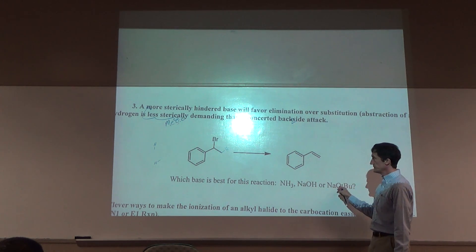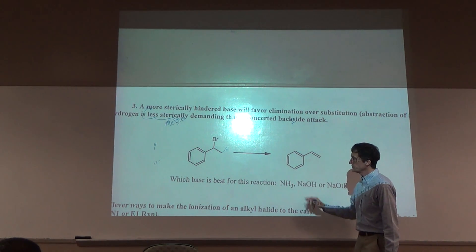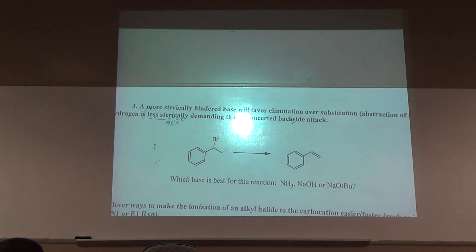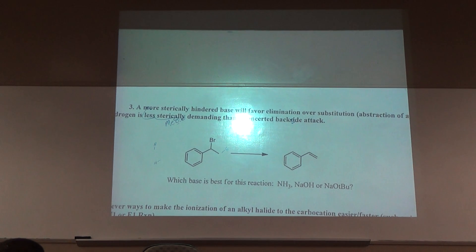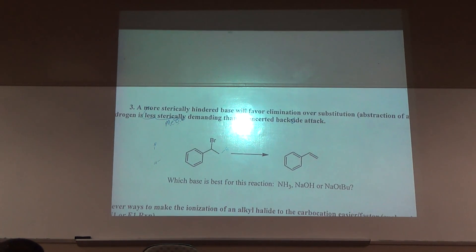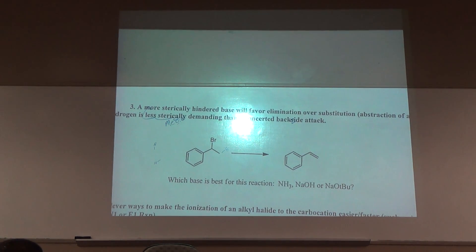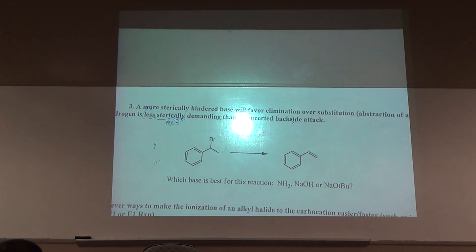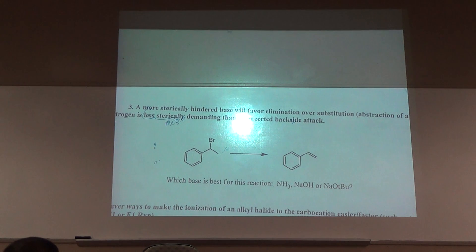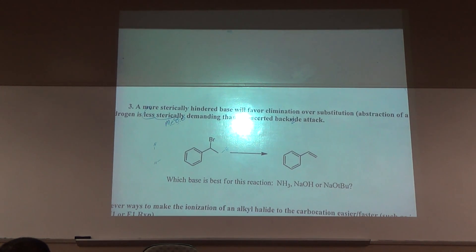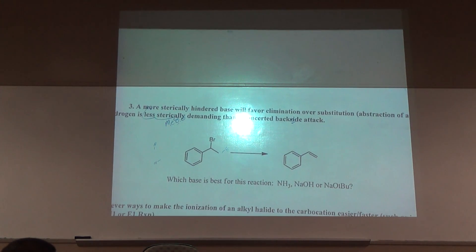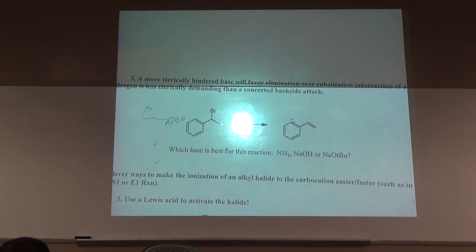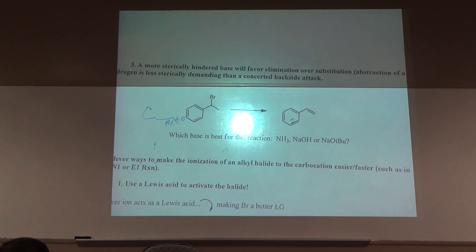So it's going to eliminate that product. These could do substitution. Sterically hindered bases tend to promote elimination because they don't do substitution well. Because SN2 is highly governed by sterics. Sterics will inhibit SN2 reactions. Elimination is not inhibited as much by sterics, although you can get the difference between Zaitsev and Hoffman.